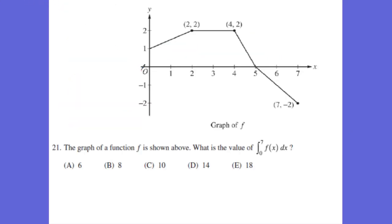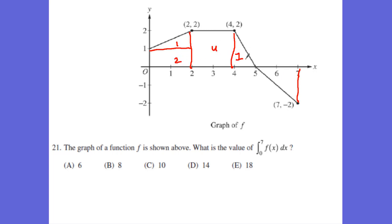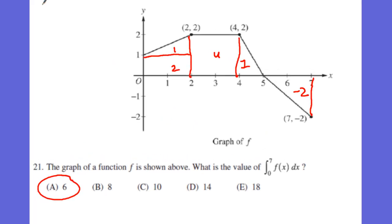Here is an accumulation of change problem — we're looking at the integral of the area from 0 to 7. I split this up into rectangles. I get areas of 1, 2, 4, 1, and negative 2 (because it's below the axis). That gives me an accumulation of change of 6.